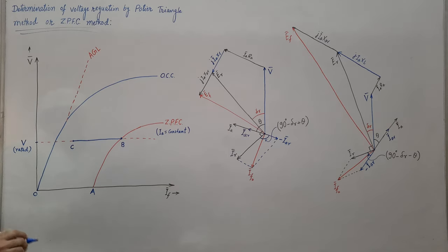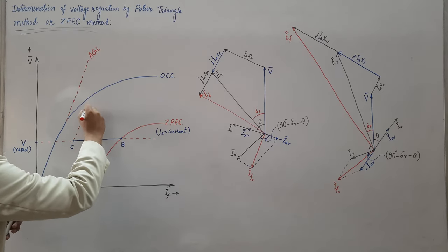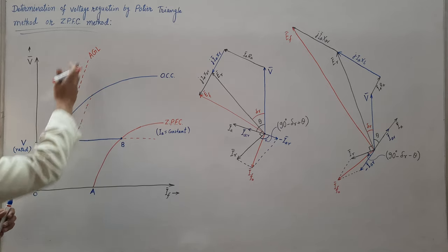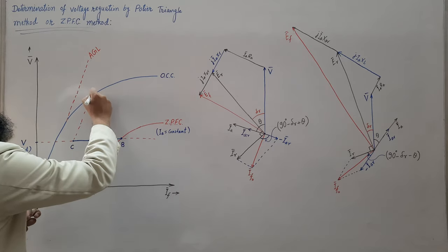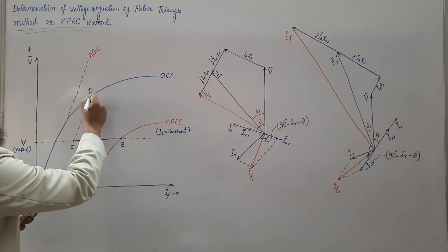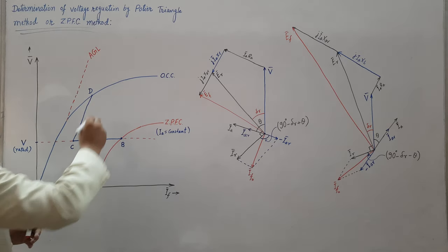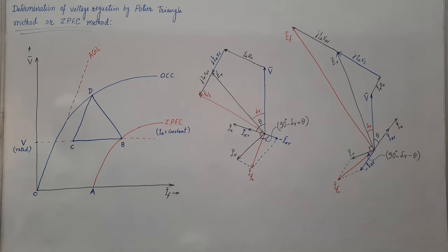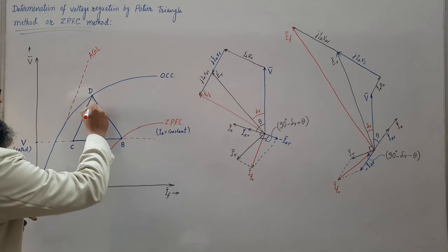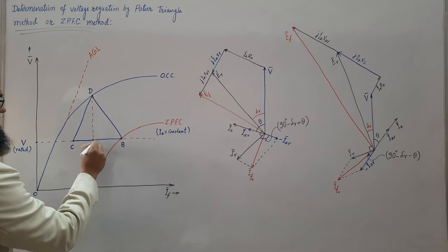Once point C is obtained, draw a line from C parallel to line AGL, and let the point of intersection with the OCC be D. Connect point D with point B as a straight line. Next, draw a perpendicular from D — mark the foot of the perpendicular as E.